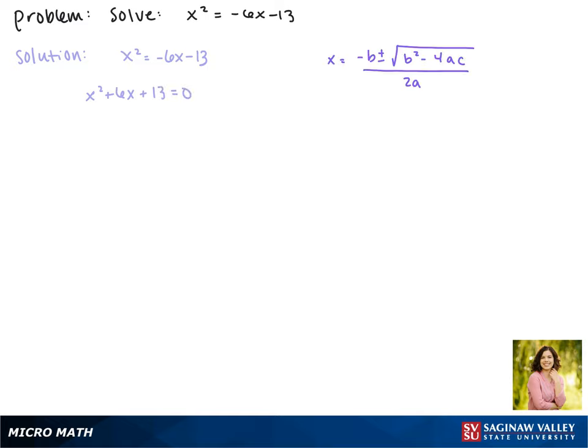This can't be factored, so we're going to use the quadratic formula. Plugging in our values, we get negative 6 plus or minus the square root of 6 squared minus 4 times 13 times 1, divided by 2 times 1.